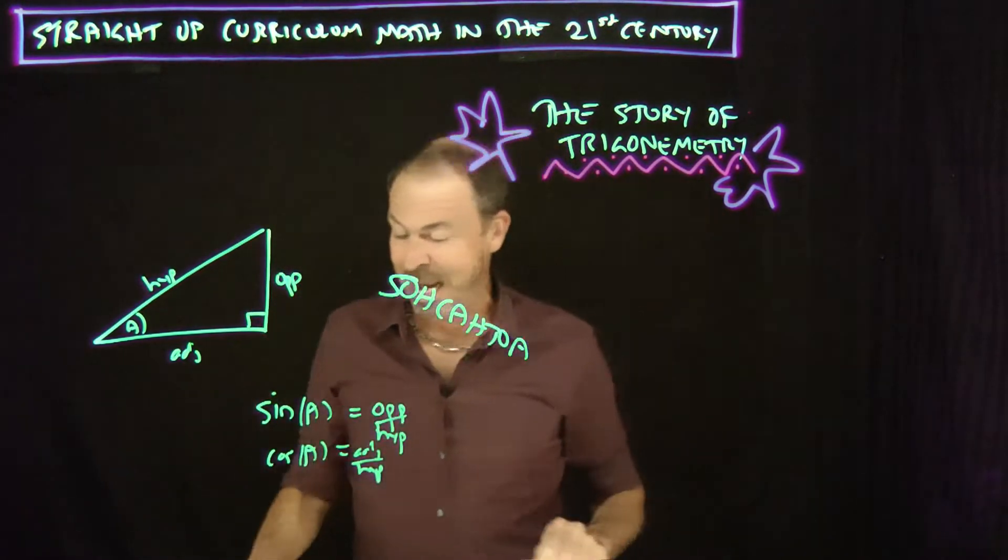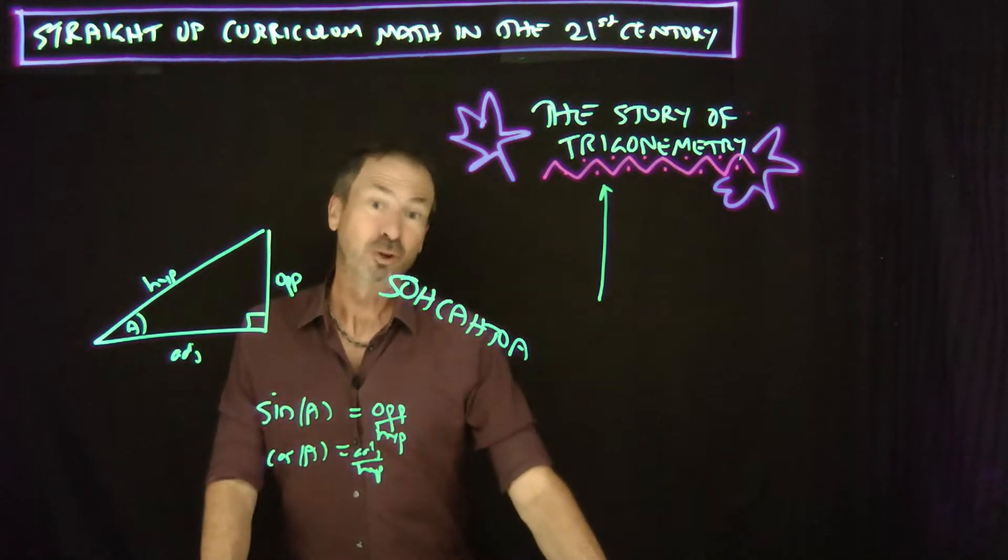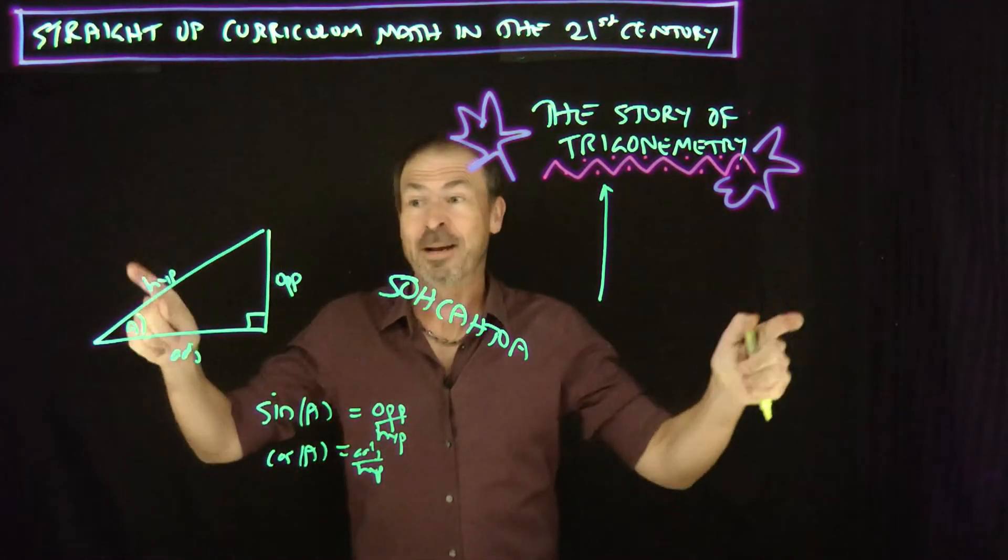And at first thought, you say, okay, trigonometry—the name trigonometry, it must be a theory about, well, what does tri mean? About triangles. So in your mind, before you even start, you probably think it's a theory about triangles.